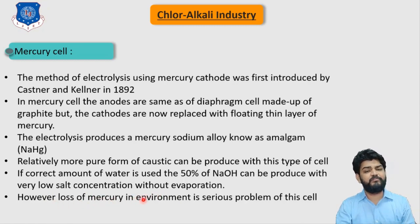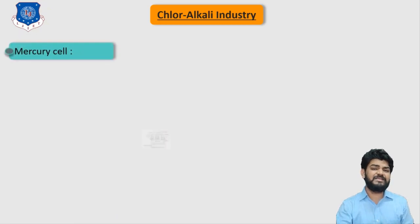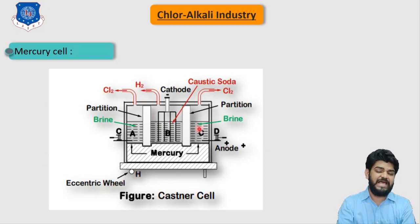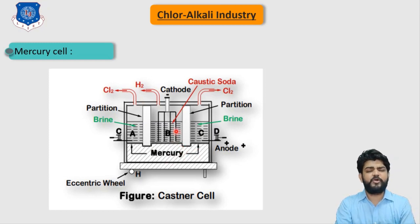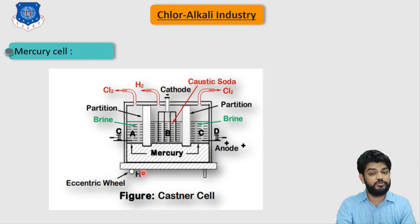However, loss of mercury into the environment is a very serious problem. Now let's understand the schematic diagram of the mercury cell. As shown in the image, this is an example of the Castner cell invented in the 19th century. The anode compartment uses graphite anodes and floating mercury replaces the cathode. We pass concentrated brine solution and supply external electricity to carry out the electrolysis.